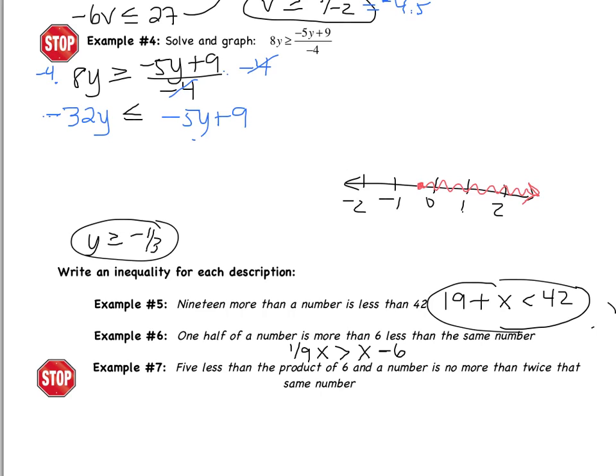Example 7 is yours to do: 5 less than the product of 6 and a number is no more than twice that same number. When you come to class tomorrow, we will go over this. Please make sure to remind your teacher to go over this in case she or he forgets. Good luck, and see you tomorrow.